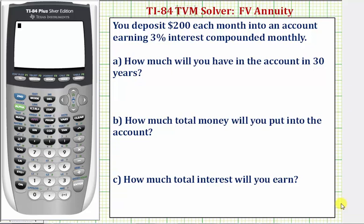Welcome to an example on how to use the TI-84 TVM solver in order to determine the future value of an annuity. Let's look at our example. You deposit $200 each month into an account earning 3% interest compounded monthly. Part A: how much will you have in the account in 30 years?